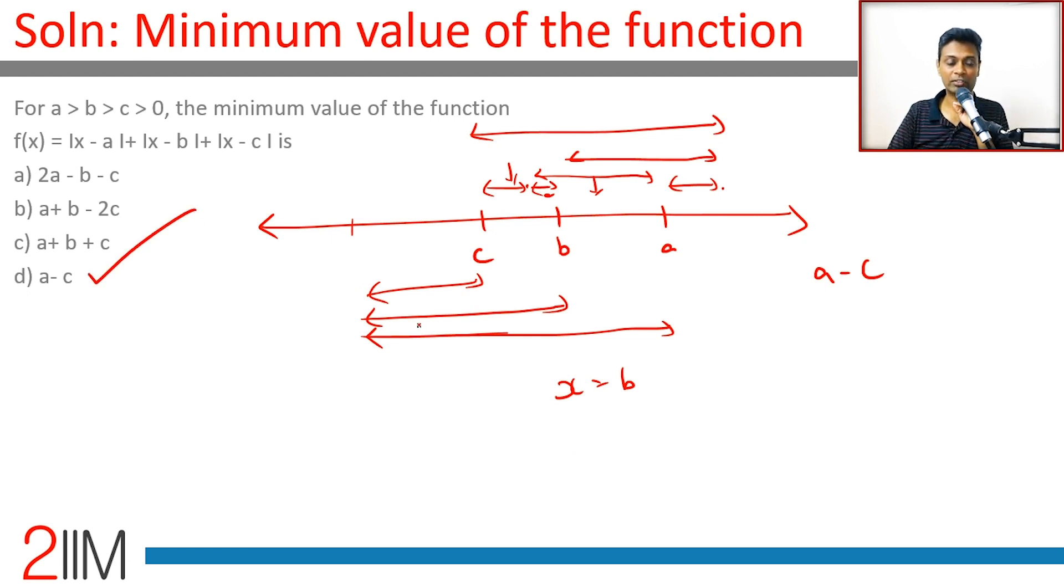That's the answer you're looking for. Beautiful question! The minimum value of the function is a minus c, and that happens when x is equal to b.